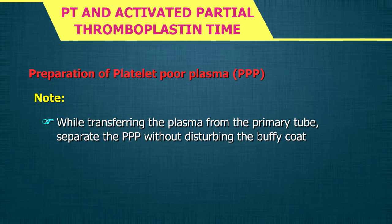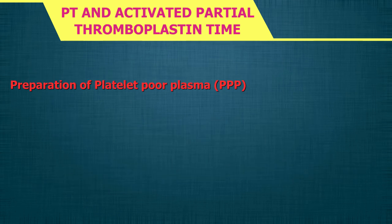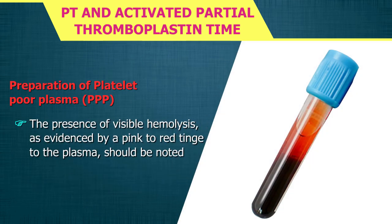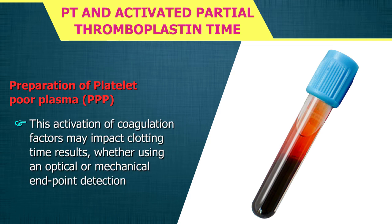When transferring plasma from the primary tube, separate the PPP without disturbing the buffy coat. When aliquoting to a secondary tube, take care not to include residual platelets that may have collected at the bottom of the centrifuge tube. Note the presence of visible hemolysis indicated by a pink-to-red tinge. Lysis of red blood cells and release of intracellular or membrane components may cause clotting factor activation, impacting clotting time results whether using optical or mechanical endpoint detection.